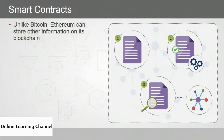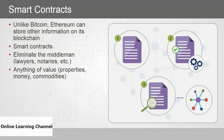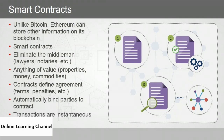Unlike Bitcoin, Ethereum can store information other than bitcoins and their owners on its blockchain. The focus of Ethereum is on smart contracts, which allow parties to eliminate the middleman — lawyers, notaries, brokers, and so on. Smart contracts can be used for anything of value: real estate, cash, commodities. The smart contract defines specifics of the agreement — terms, penalties, and other contractual obligations — and it automatically binds parties to the contract, with instantaneous transactions.